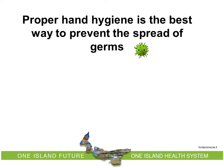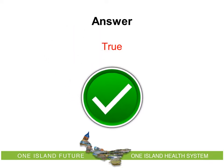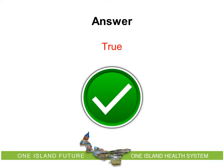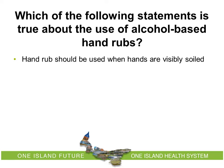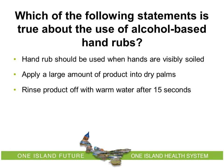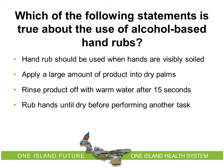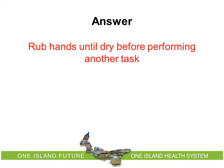Quiz: Proper hand hygiene is the best way to prevent the spread of germs — true or false? The answer is true. Proper hand hygiene is the best routine practice to prevent the spread of germs. Which of the following statements is true about alcohol-based hand rubs? Options: hand rubs should be used when hands are visibly soiled; apply a large amount into dry palms; rinse off with warm water after 15 seconds; or rub hands until dry before performing another task. The correct answer is: rub hands until dry before performing another task.